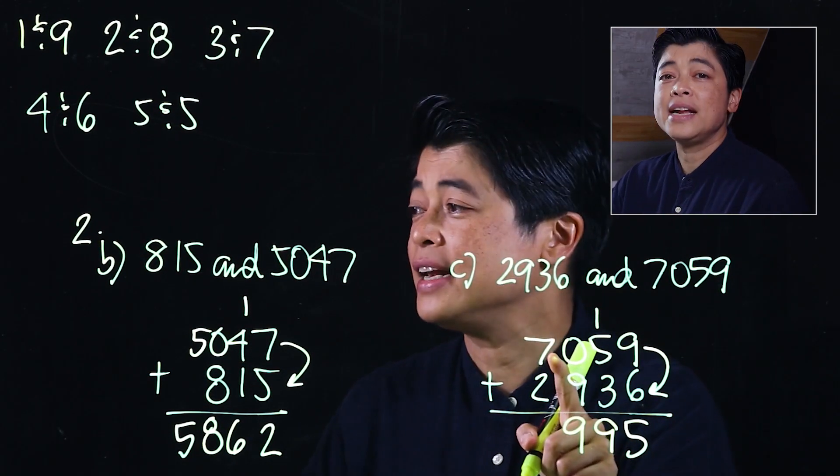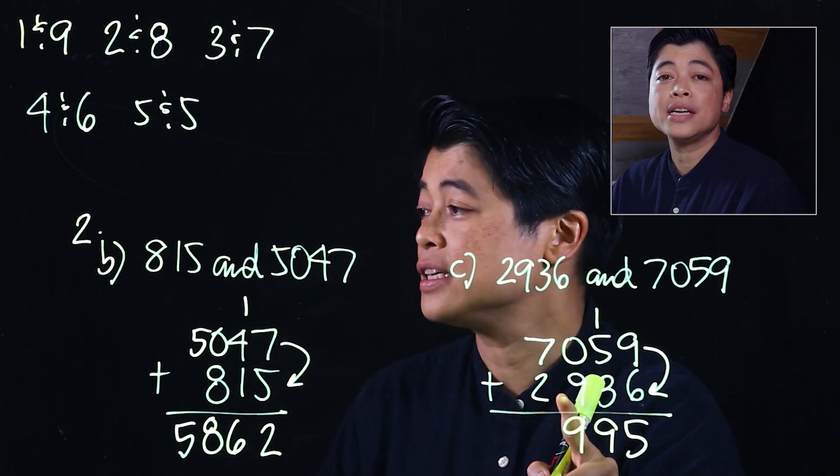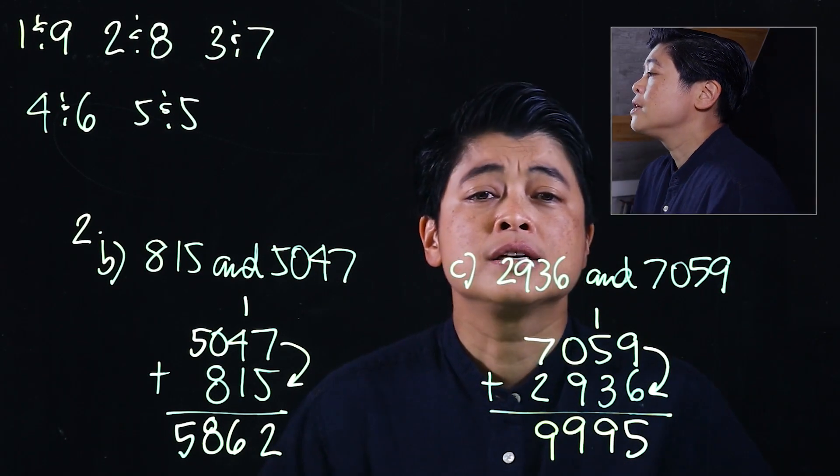Start with the bigger digit: 9 plus 0 is 9, and finally 7 plus 2 is also 9. So parents, it's important that we teach our kids the pairings, and to start with the bigger digit first and add the smaller digit so that it's easier for the brain. That concludes Lesson 2 of Chapter 2. See you in the next lesson.